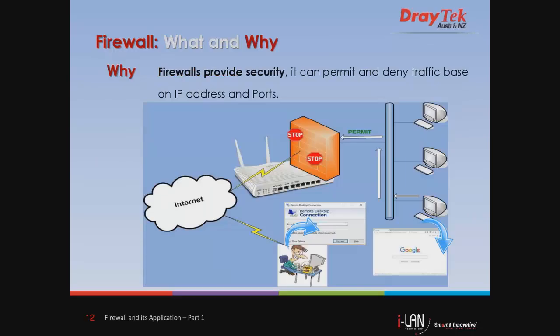Firewalls provide security. They can permit and deny traffic based on IP addresses, protocol, and ports. As you can see here, a computer that belongs to the local area network can easily access the internet because they were granted permission to do so, whereas an attacker wanting to access a server through Windows Remote Desktop cannot go through because they have been blocked by the firewall.